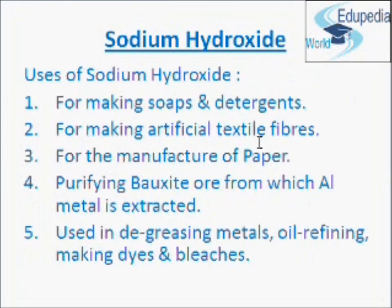Now, uses of sodium hydroxide. Sodium hydroxide is used for making soaps and detergents. It is also used for making artificial textile fibers. Sodium hydroxide is used in the manufacture of paper. It is used in purifying bauxite ore from which aluminum metal is extracted. Sodium hydroxide is also used in degreasing metals, oil refining, and making dyes and bleaches.